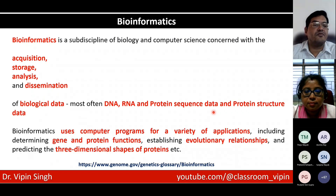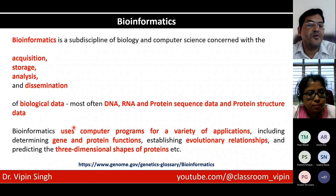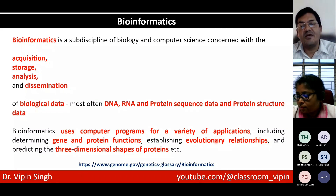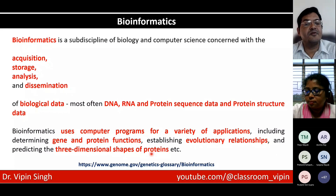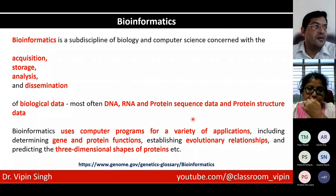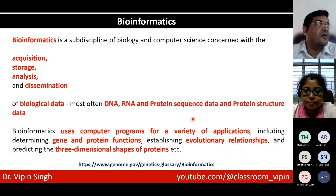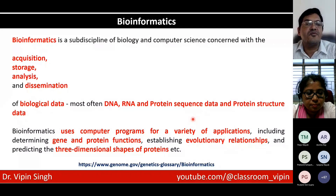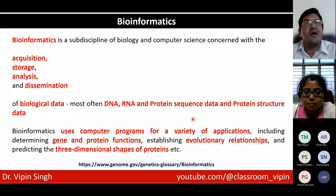Bioinformatics uses computer programs for a variety of applications, including determining gene and protein functions, establishing evolutionary relationships, and predicting three-dimensional shapes of proteins. If you get the raw data, it doesn't mean anything by itself — it is just a sequence of ATGC or just a sequence of amino acids. You want to derive further information from there, so you need to annotate the sequence that you have.